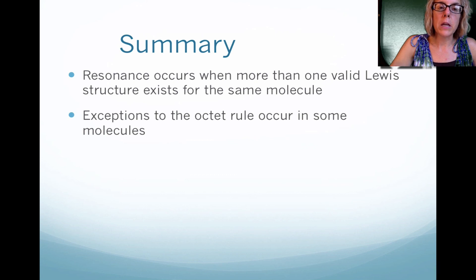In summary, resonance occurs when you can draw more than one Lewis structure for one molecule. They're essentially oscillating between those different types of Lewis structures. And then we have the three sets of exceptions to the octet rule: we have the sub-octet, we have the expanded octet, and then we have the coordinated covalent bond.